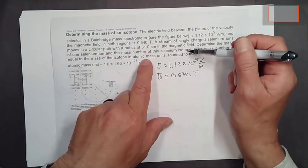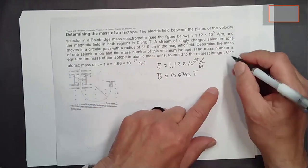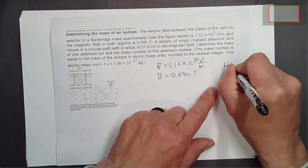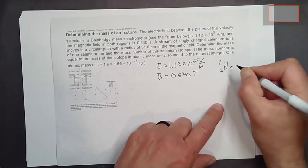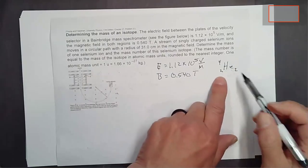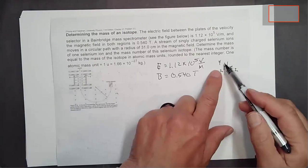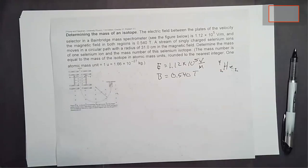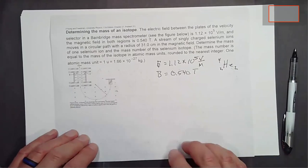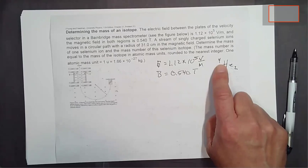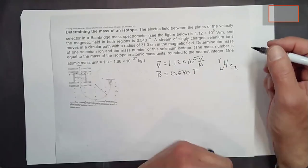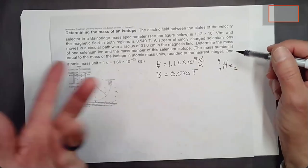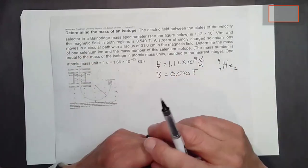The mass number refers to things like helium-4 — helium that has two protons and two neutrons. The mass number is four because it's the nuclear particles — protons and neutrons, often called nucleons — that give an atom its mass. We're after figuring out how many nucleons are in this selenium isotope.